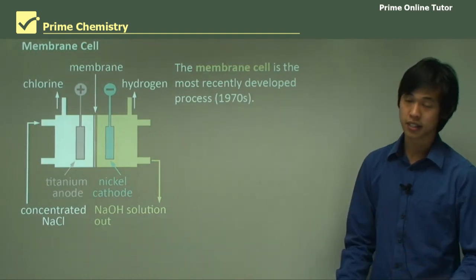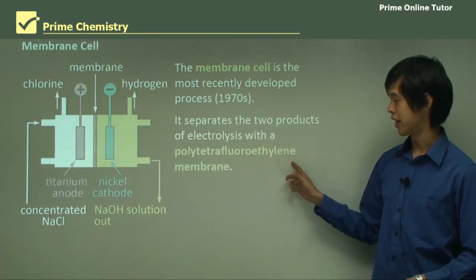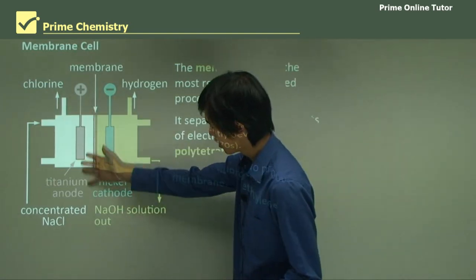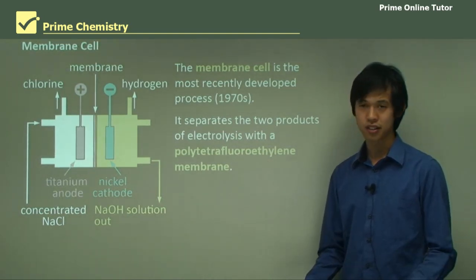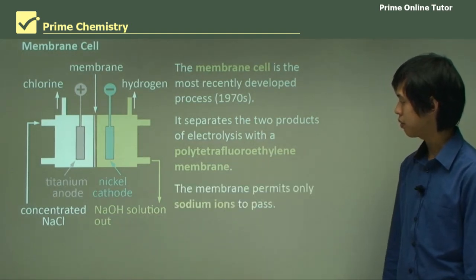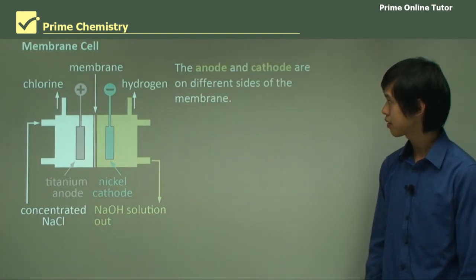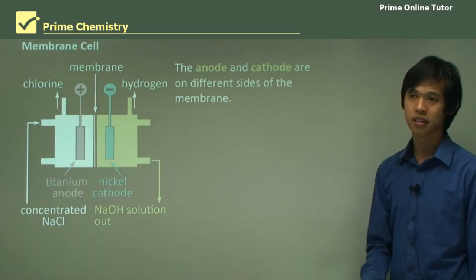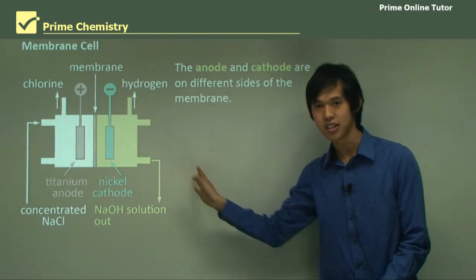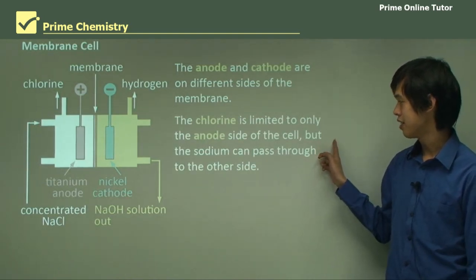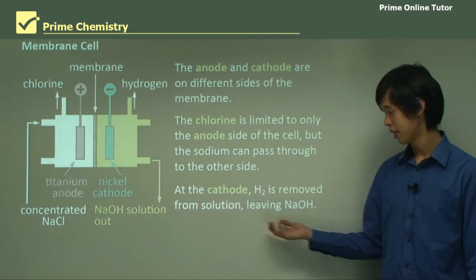The membrane cell is the most recently developed, from the 1970s, and separates the two products using polytetrafluoroethylene — PTFE — as the membrane, instead of asbestos. This helps produce purer NaOH. The membrane permits only sodium ions to pass, so it is better than the diaphragm process. The anode is on the left-hand side and the cathode on the right. Chlorine is limited to only the anode side, while sodium can pass through. At the cathode, hydrogen gas is removed, leaving only NaOH.